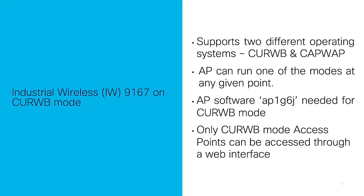In order to verify the mode on which the AP is currently configured, navigate to the CLI and type 'show version' to look at the AP software on the device. If the software displays the AP software as AP1G6J, it means that the AP is configured to operate in CURWB mode.